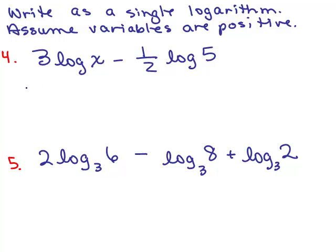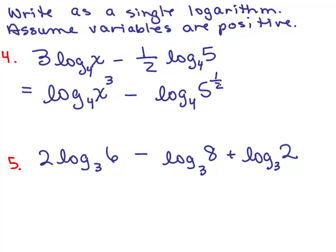So we've got, I could take these exponents, I mean, I'm sorry, the numbers in front of the logs and put them as exponents. So this will be the log of x cubed. I made a mistake here, I forgot to put the base. So let's say the base was 4 on both of these, minus, and I've got the log base 4 of 5 to the 1 half, and remember what 5 to the 1 half is, that's just the square root of 5.